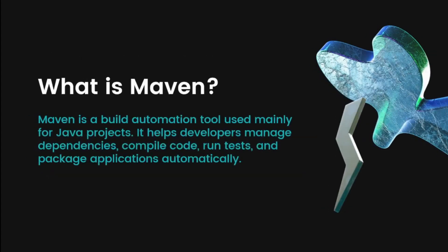What is Maven? Maven is a build automation tool used mainly for Java projects. It helps developers manage dependencies, compile code, run tests, and package applications automatically. All of these tasks can be done automatically using Maven.